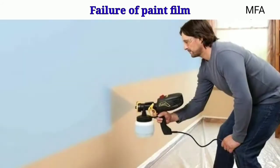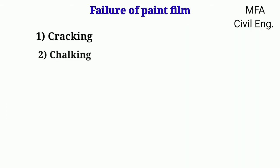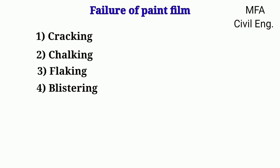Hello everyone, my name is Fazal and you are watching MFA Civil Engineering. After the application of a paint on the required surfaces, the paint is considered a failure in various cases like cracking, chalking, flaking, blistering, and bleeding.